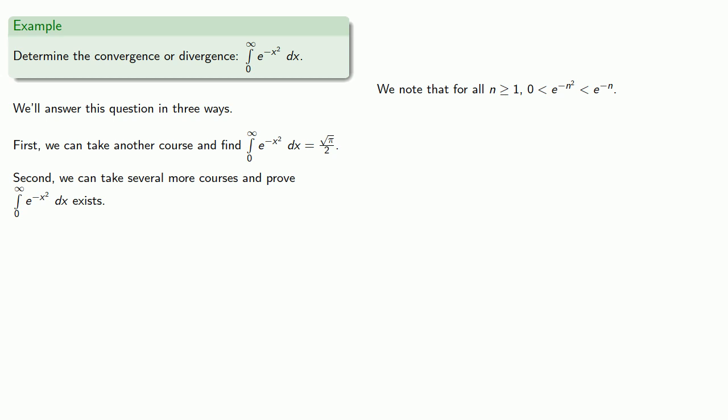Now the series with terms e to minus n, well that's a geometric series with ratio 1 divided by e, which is strictly less than 1. So this series converges. And since e to minus n squared is smaller, our series of smaller terms also converges by the comparison test.